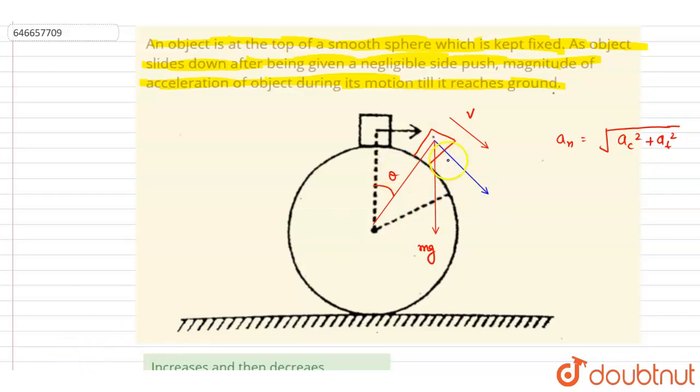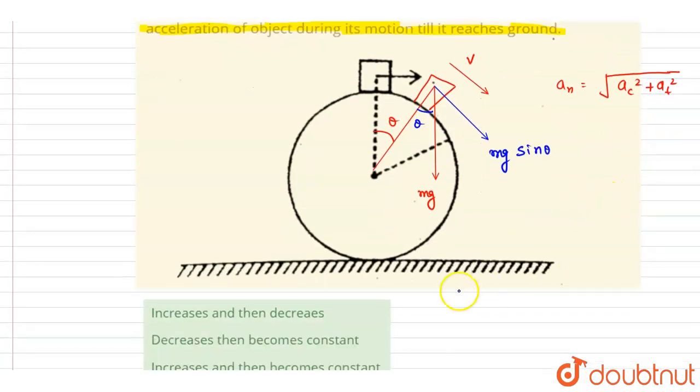If you see here, this is theta and we'll say this is mg sine theta. So certainly if you see, if I write down the tangential acceleration, it will be tangential force by mass. Tangential force is mg sine theta, so mg sine theta by m.